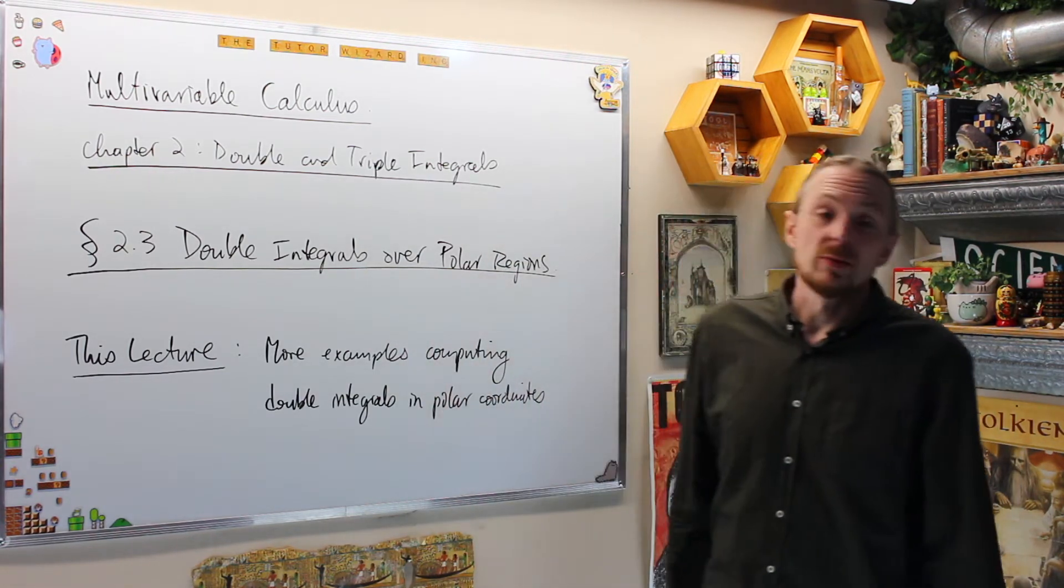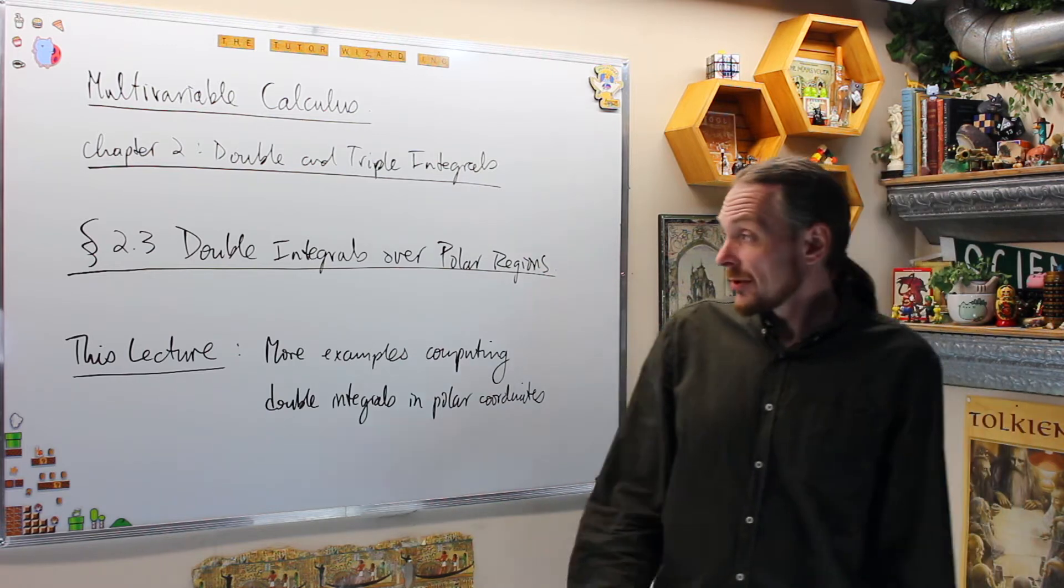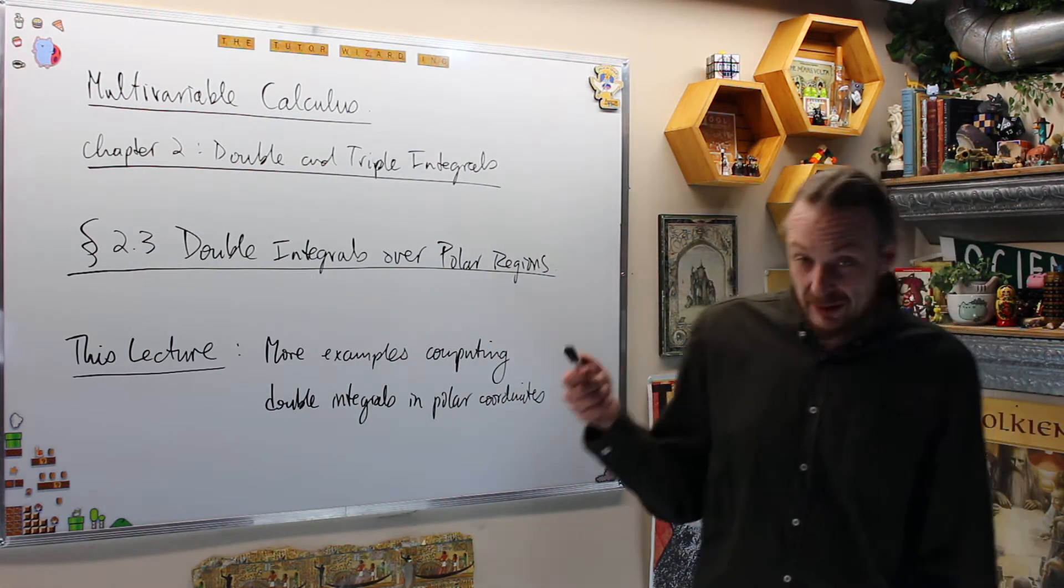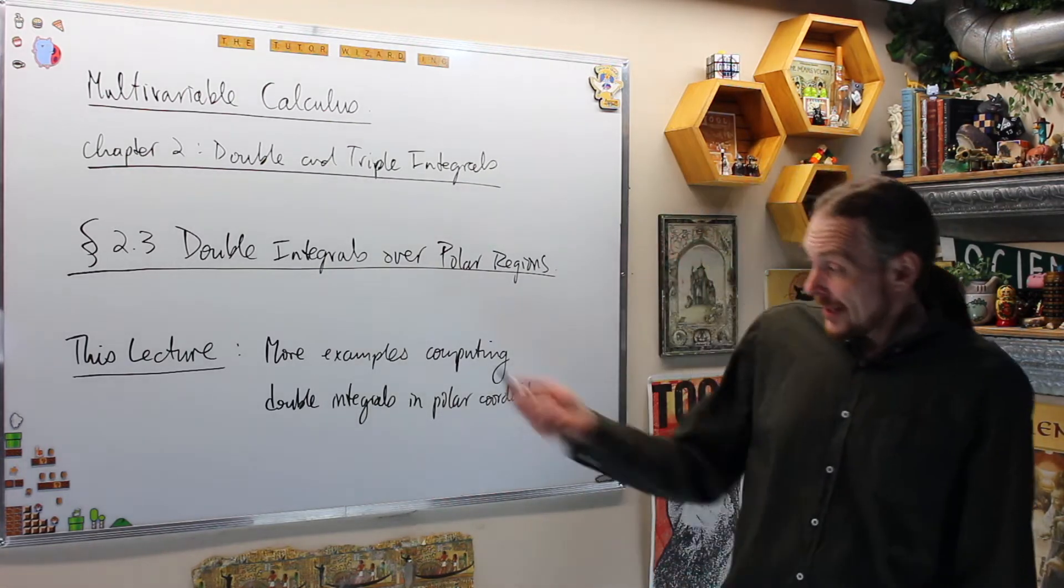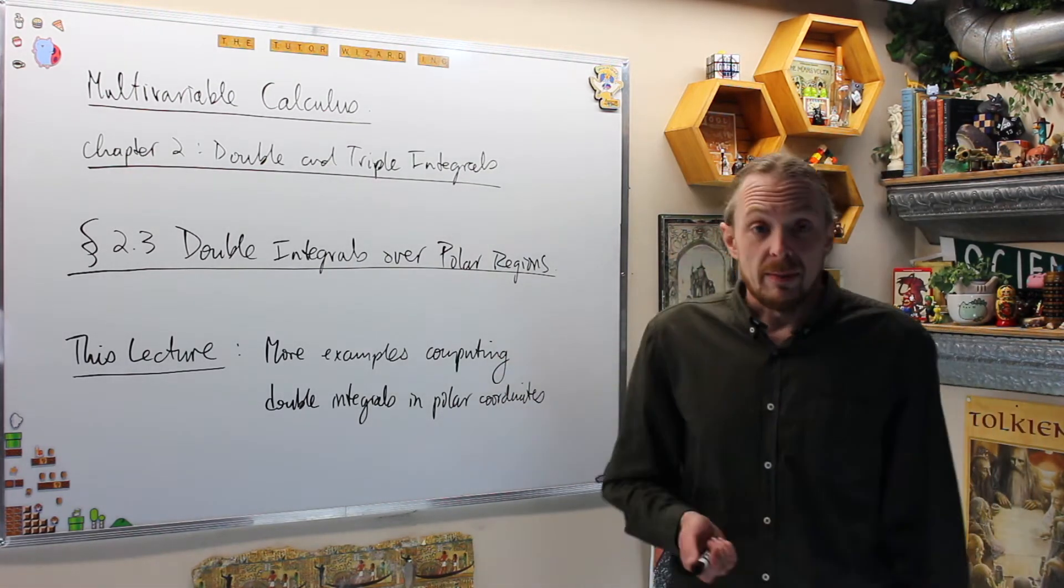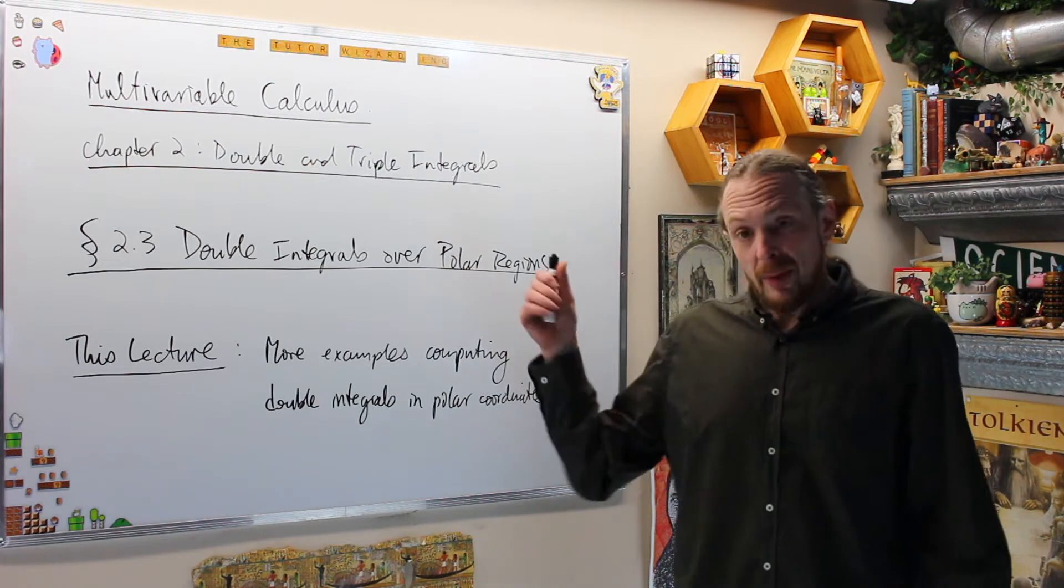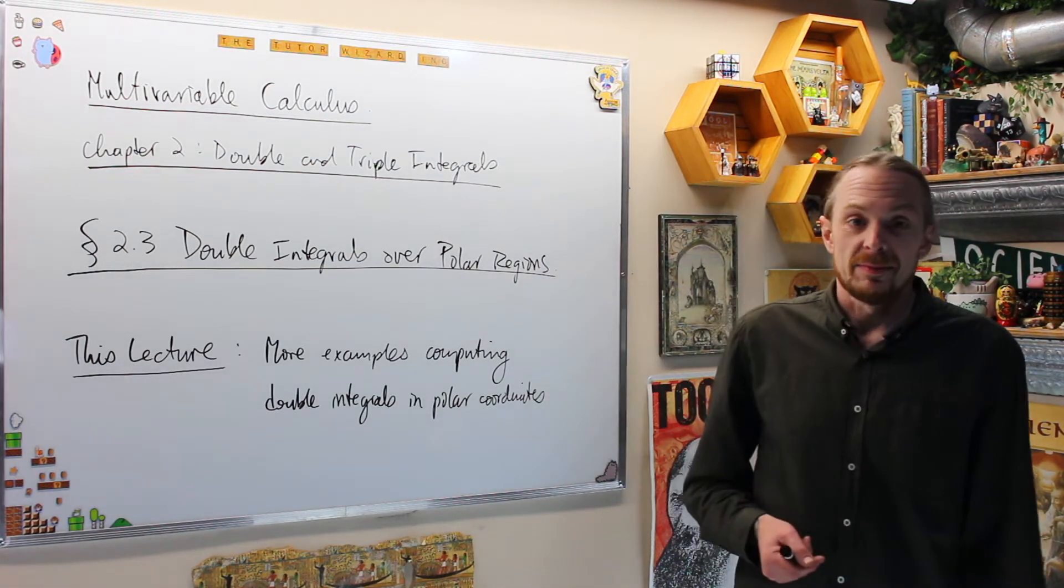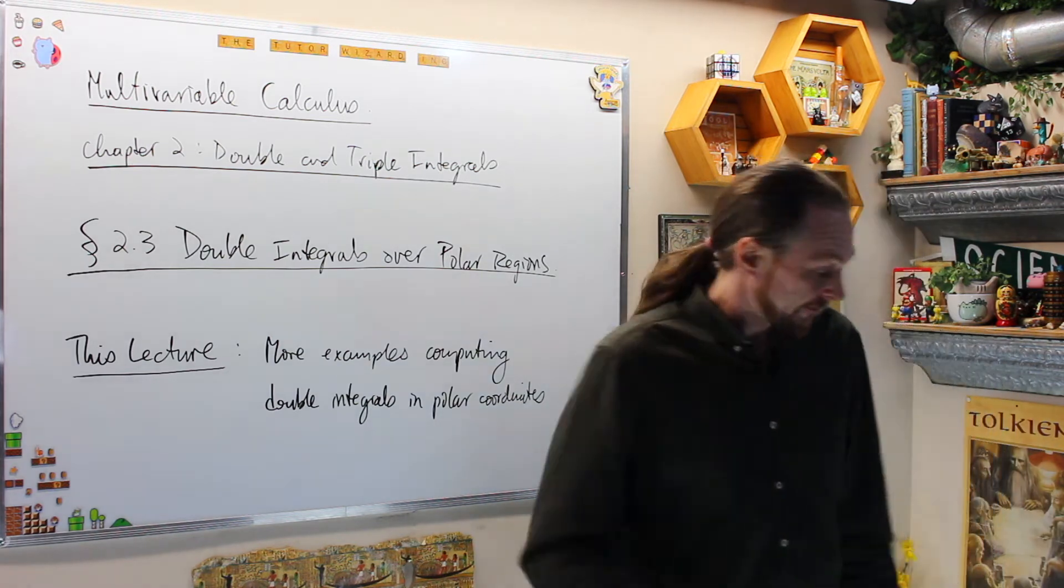We're doing multivariable calculus. We're in chapter 2, which is double and triple integrals. Specifically today, we're going to do section 2.3, which is double integrals over polar regions again. And we're just going to do more examples of computing standard polar rectangles, which is an oxymoron as far as I'm concerned, and then general polar regions. Let's do that.